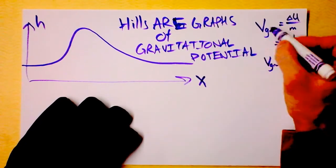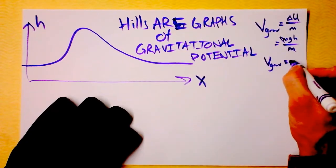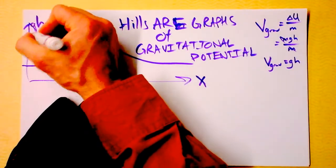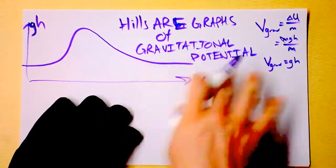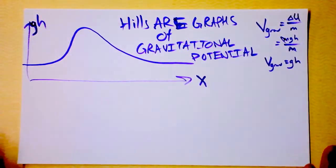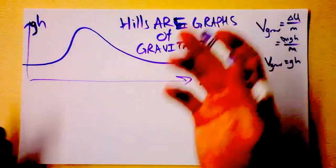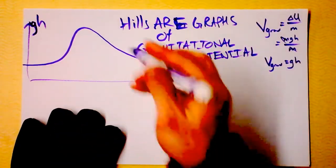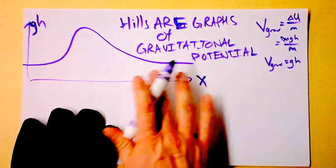Not gravitational potential energy, sorry — gravitational potential is just g times h. So I could rescale this by multiplying by g, and nobody would notice. A hill is a graph of gravitational potential. And that means it's also a graph of gravitational potential energy for all mass, because I multiply by m and I've still got the same shape.